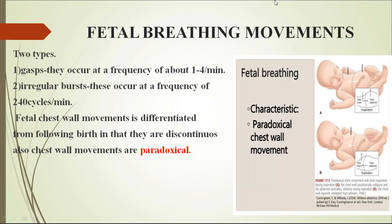Fetal breathing movements are of two types: gasps or irregular bursts. Fetal chest wall movements differ from those after birth. After birth, during inspiration the chest wall expands and during expiration it collapses. But in fetal breathing, there is a characteristic paradoxical chest wall movement: during inspiration the chest wall collapses, and during expiration it expands. This paradoxical chest wall movement is characteristic of the fetus as compared to a newborn.